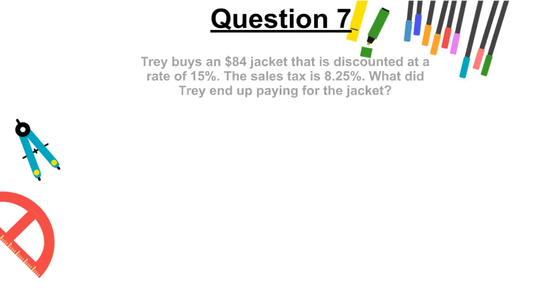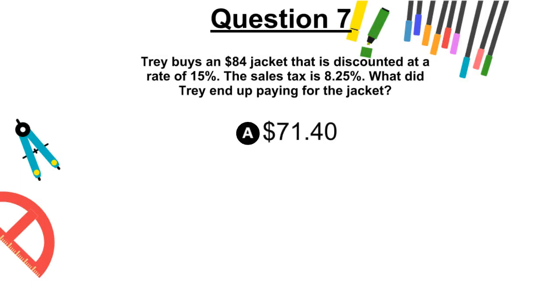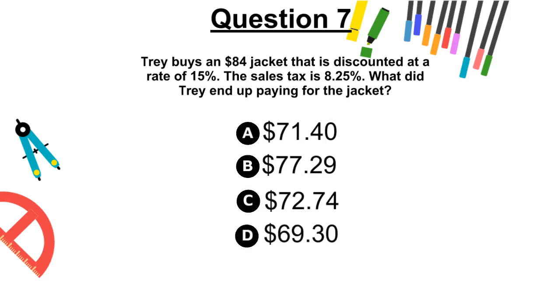Question 7. Trey buys an $84 jacket that is discounted at a rate of 15%. The sales tax is 8.25%. What did Trey end up paying for the jacket? A, $71.40, B, $77.29, C, $72.74, or D, $69.30.